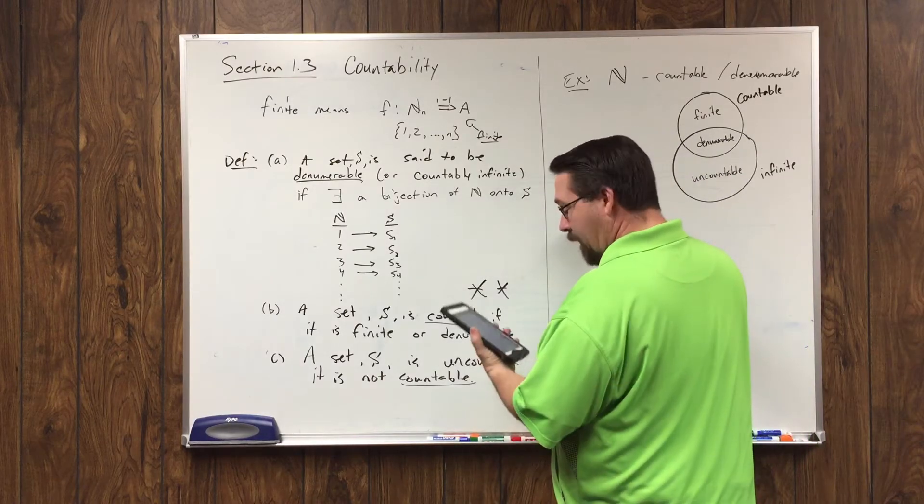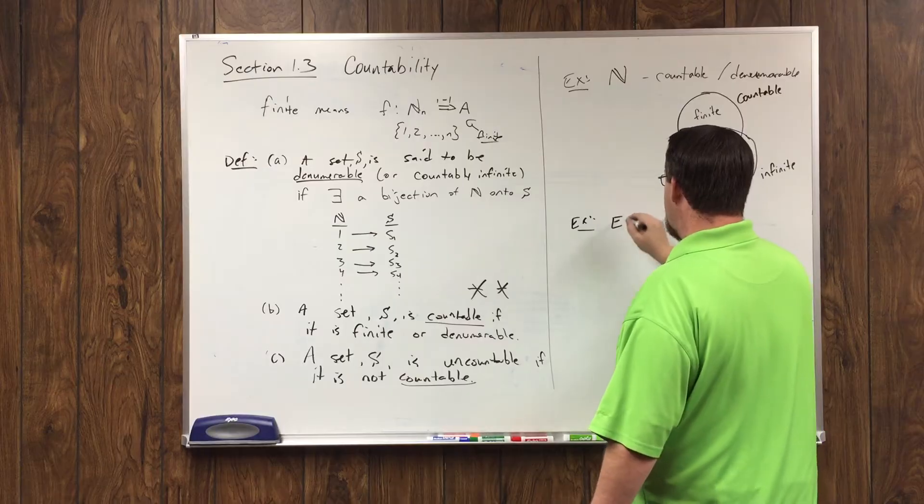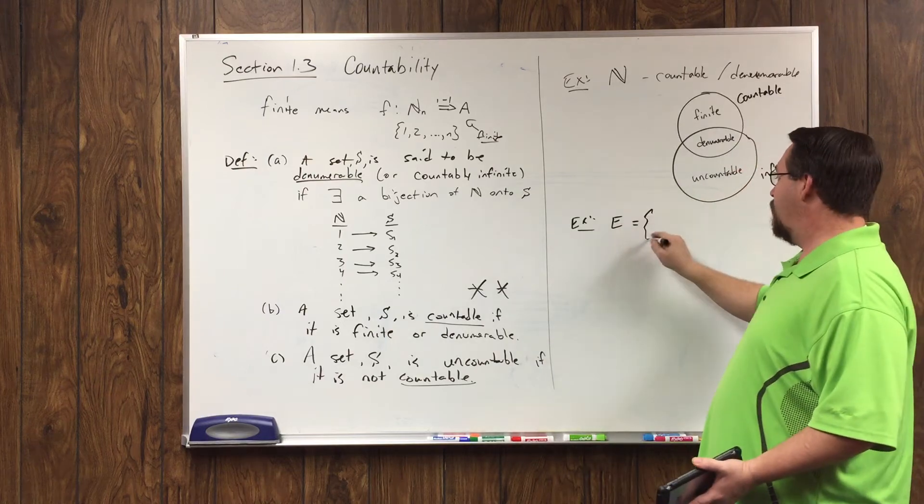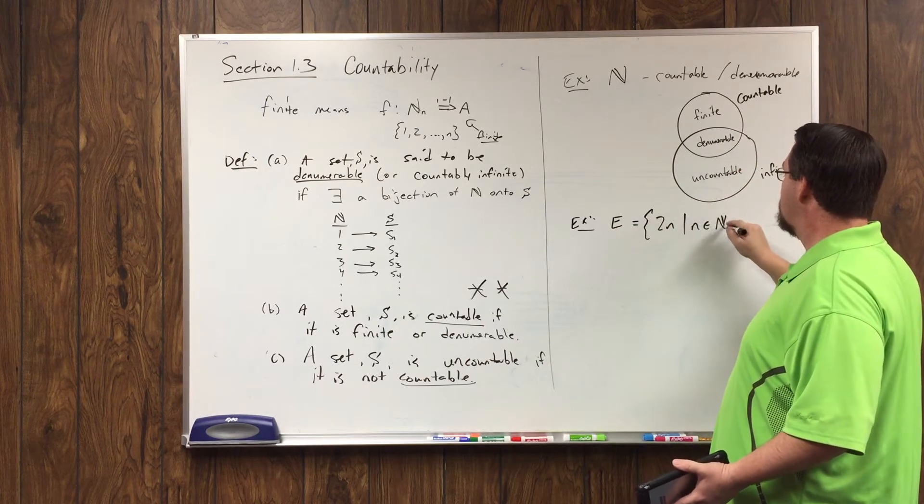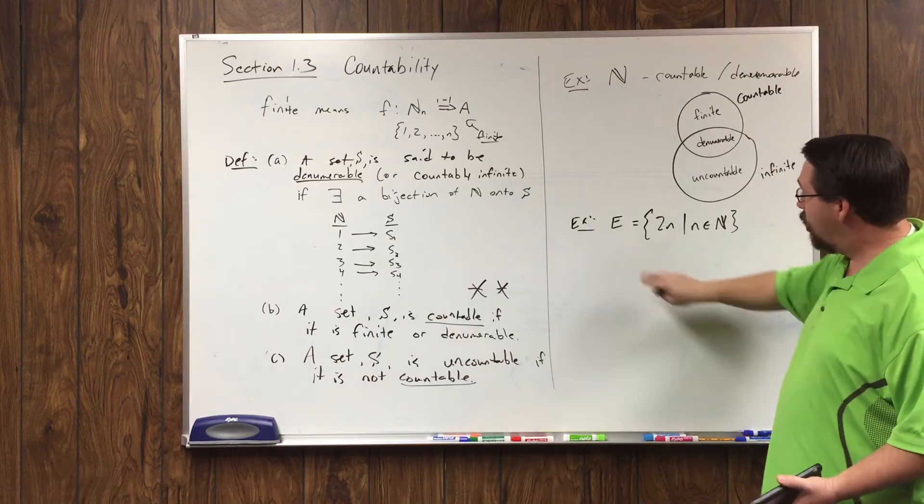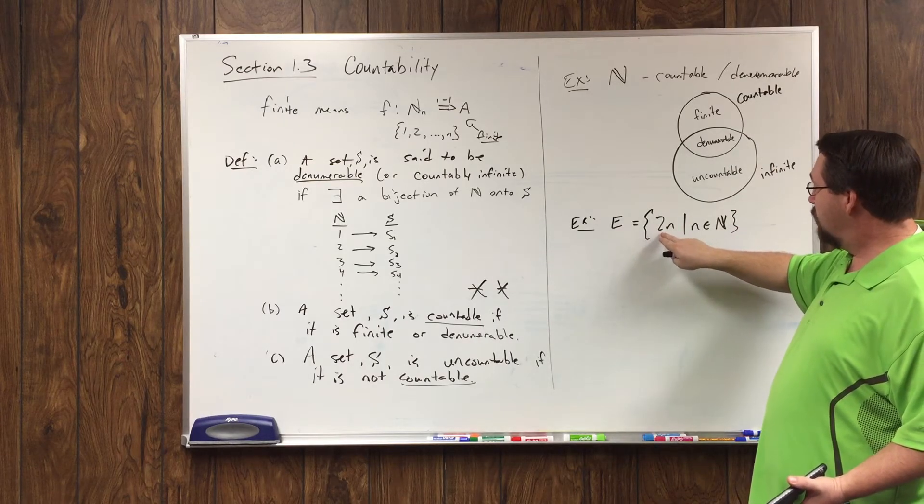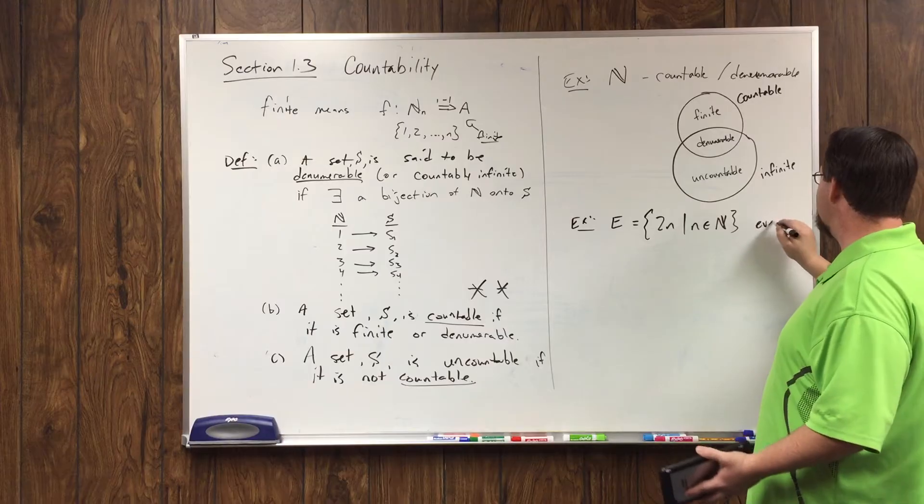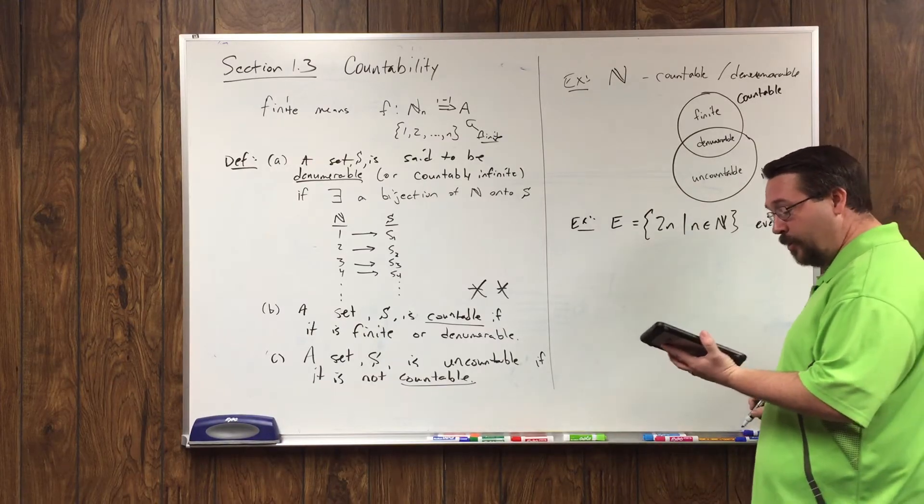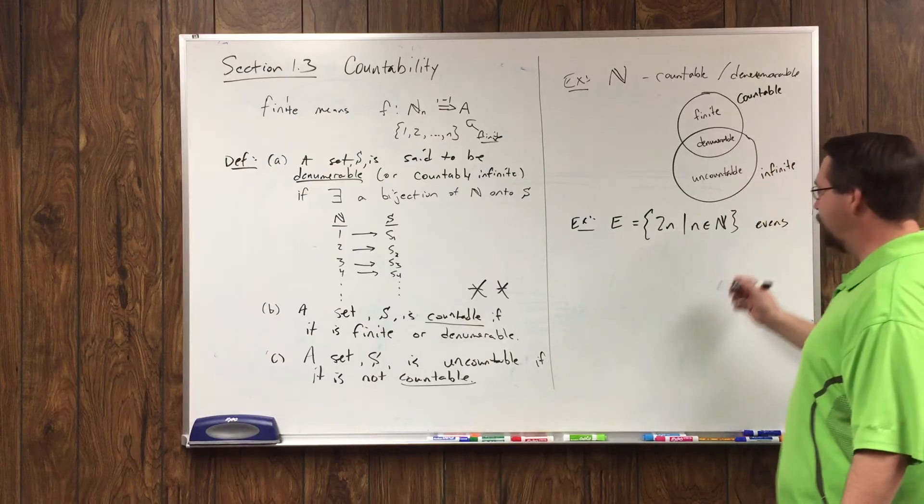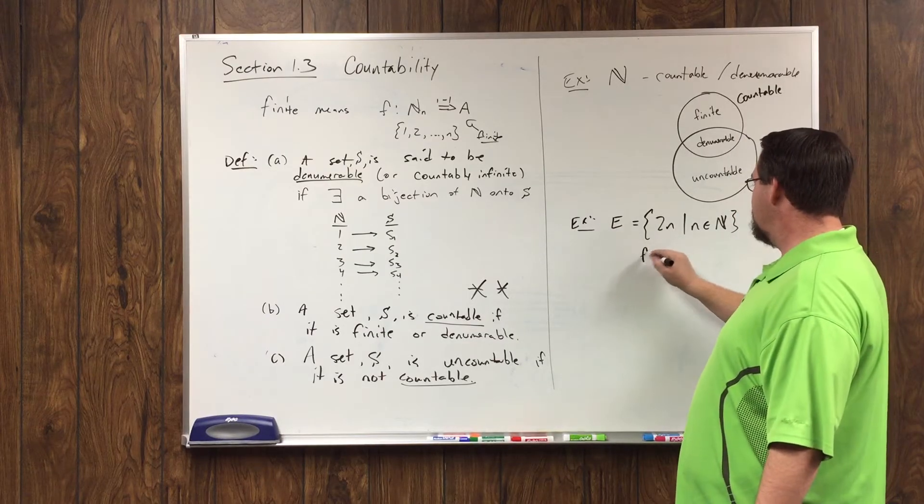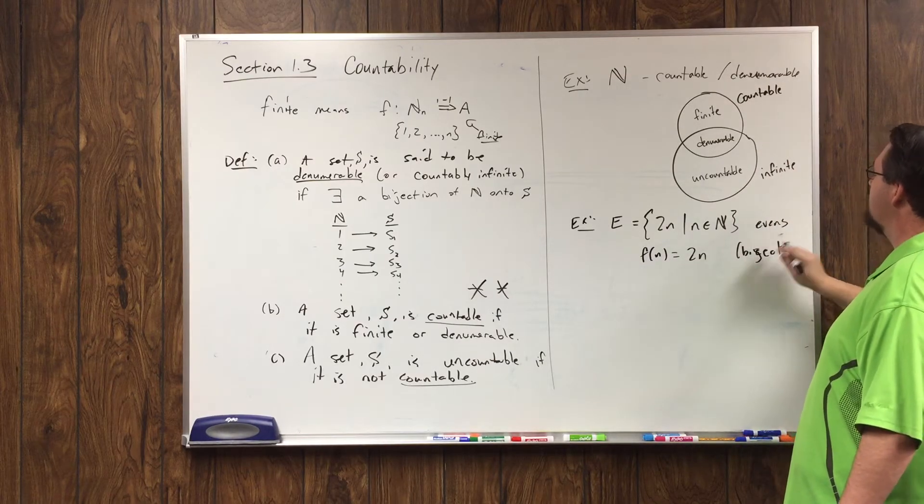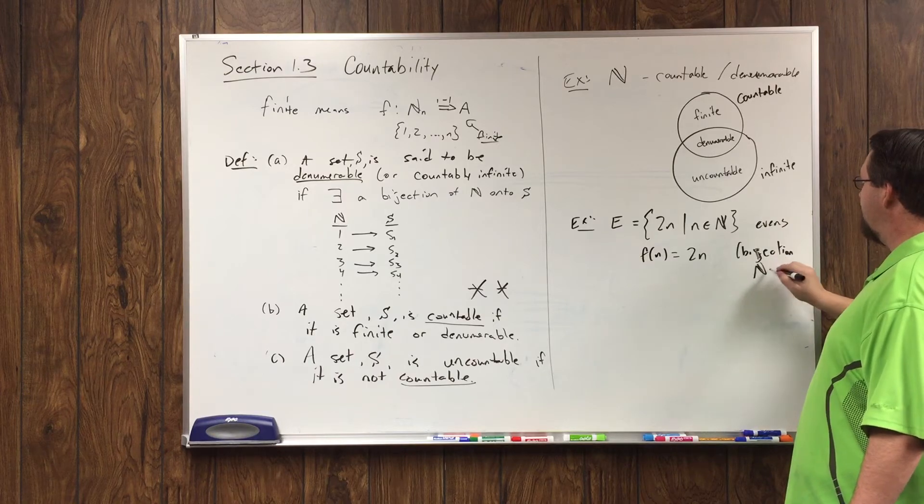Alright, now, another one that turns out to be countable, and it's obvious from the definition because it won't be hard to figure out what the mapping is. Let's say E is the set of all these guys. So E is the set of all numbers that are of the form 2N where N is a natural number. So, what's that set? That set is, obviously, the evens. I claim the evens are a denumerable set. Obviously, they're infinite, but they're denumerable because this right here, this function 2N is a bijection from the natural numbers onto E.